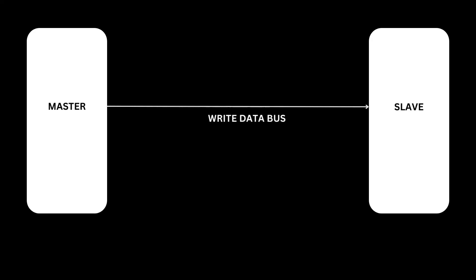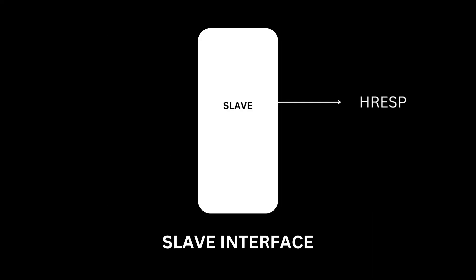Every transfer consists of an address phase of one address and control cycle, and a data phase of one or more cycles for the data. A slave cannot request that the address phase is extended, and therefore all slaves must be capable of sampling the address during this time. However, a slave can request that the master extends the data phase by using HREADY. This signal, when low, causes wait states to be inserted into the transfer and enables the slave to have extra time to provide or sample data. The slave uses HRESP to indicate the success or failure of a transfer.